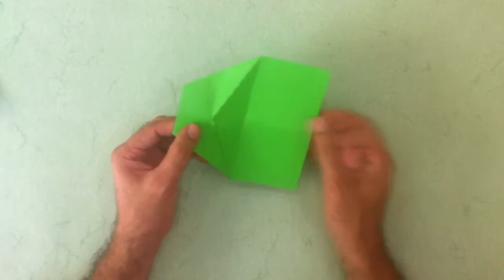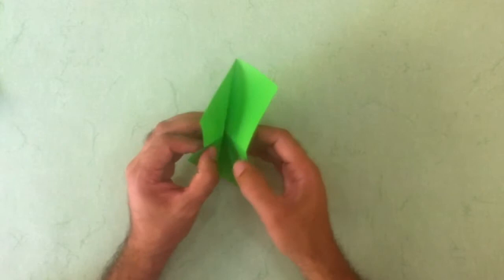Go back to this side and now we are going to collapse by using the valley and the two mountain fold lines. Just like this.